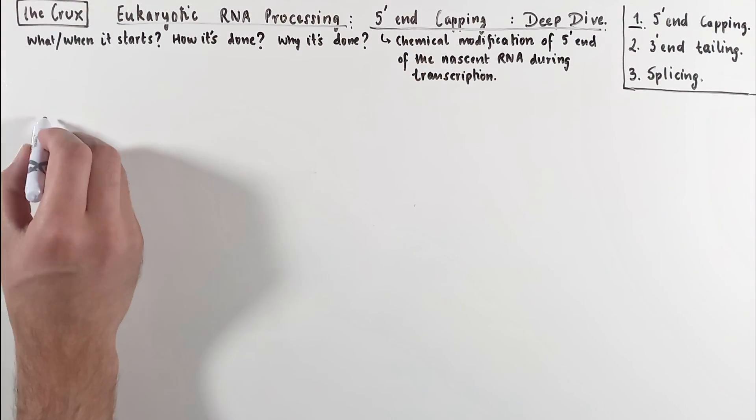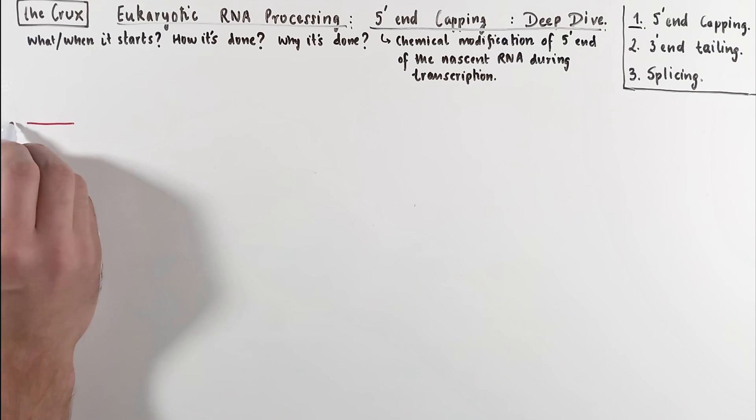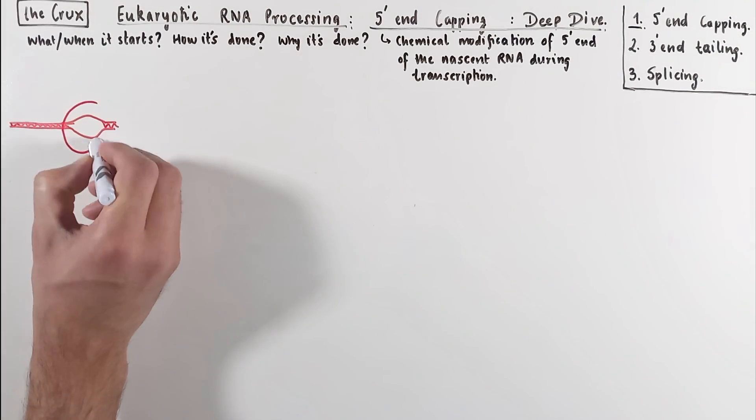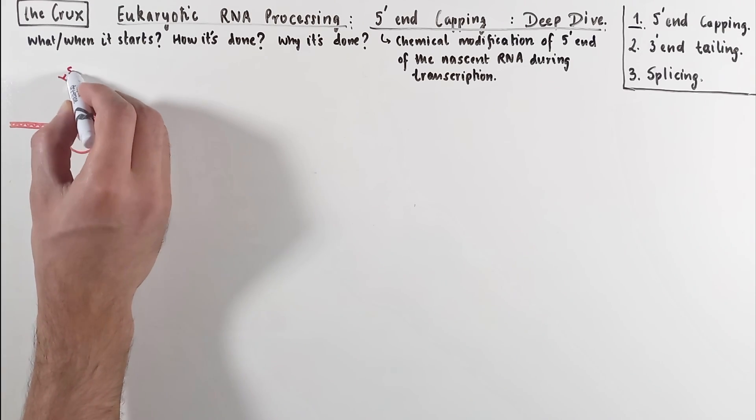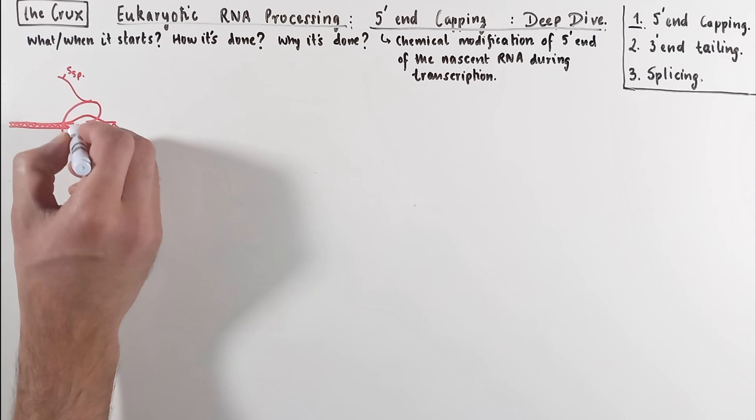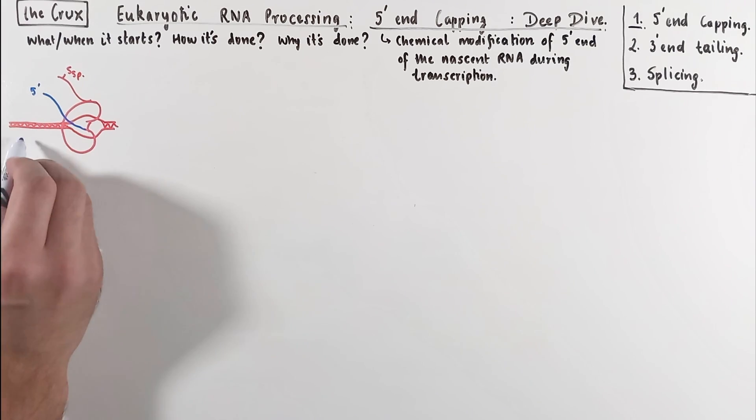Now if you recall the promoter proximal pausing stage when we discussed the transition of polymerase from the initiation into elongation, we noted that the serine 5 on the C-terminal domain of the polymerase gets phosphorylated, and the RNA at this stage is around 25 to 50 nucleotides in length.